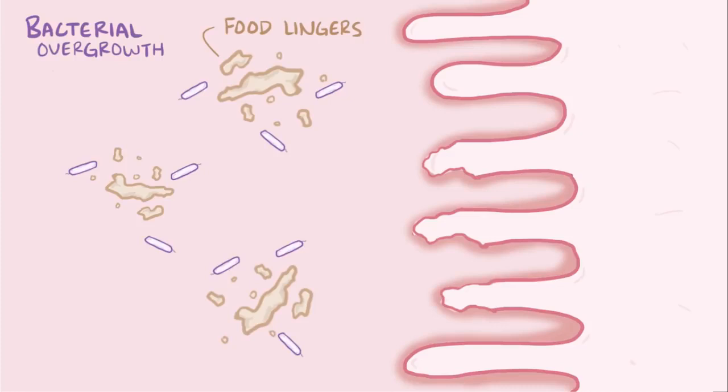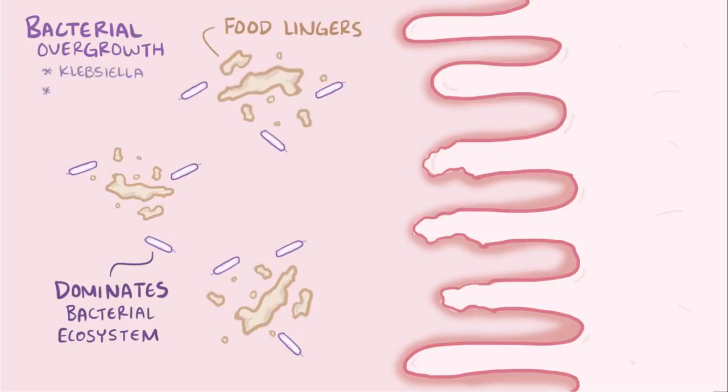Bacterial overgrowth refers to the idea that some organisms begin to overpopulate and therefore dominate the bacterial ecosystem of the intestines. In tropical sprue, Klebsiella, E. coli, and Enterobacter end up becoming these dominant bacteria.